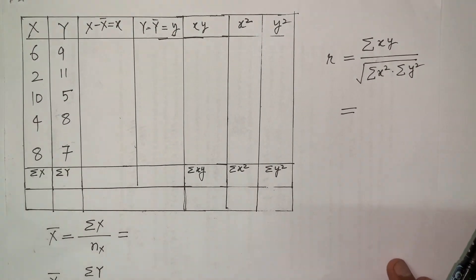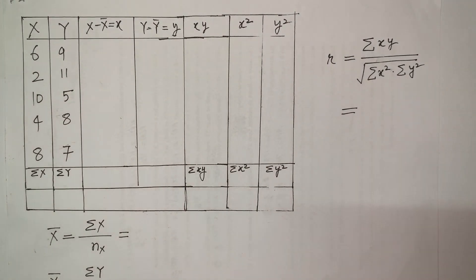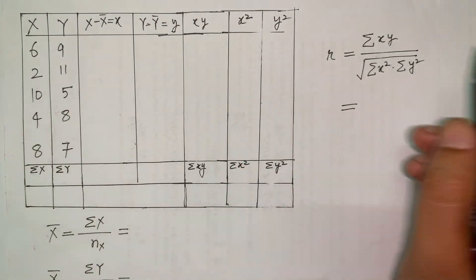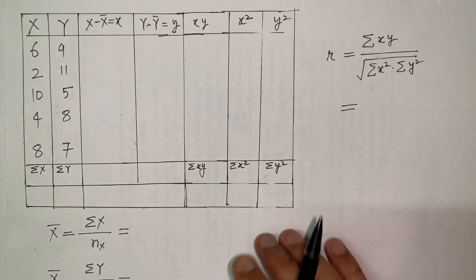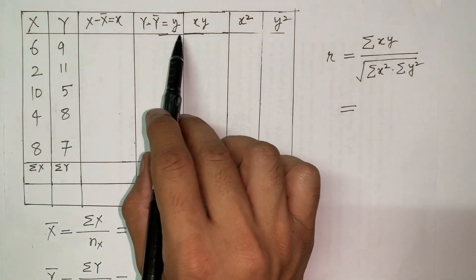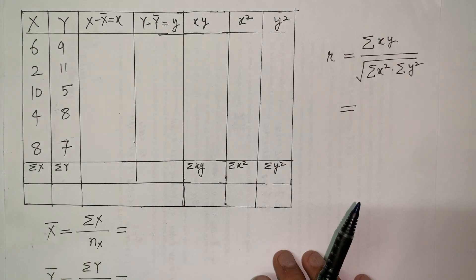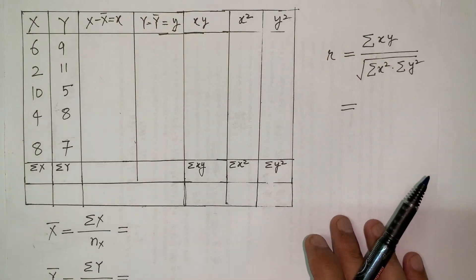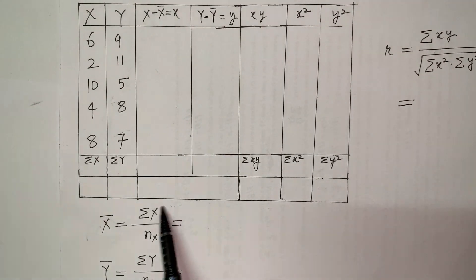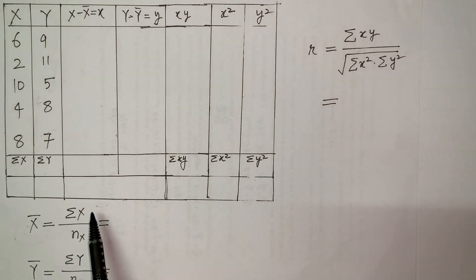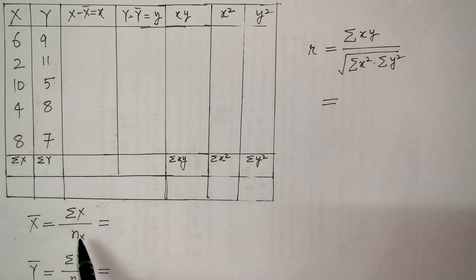Here is the solution sheet. I have variable X and variable Y. The formula is r = Σ(xy) / √(Σx² · Σy²), where small x = X − X̄ and small y = Y − Ȳ. First I need to calculate X̄ (mean of X) and Ȳ (mean of Y). The formula for X̄ is the summation of X divided by n. There are five observations, so n = 5.